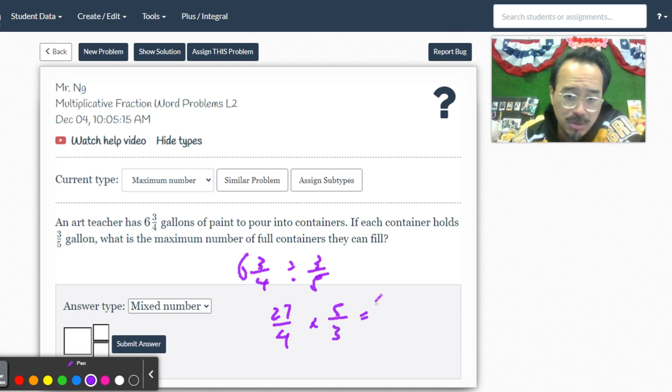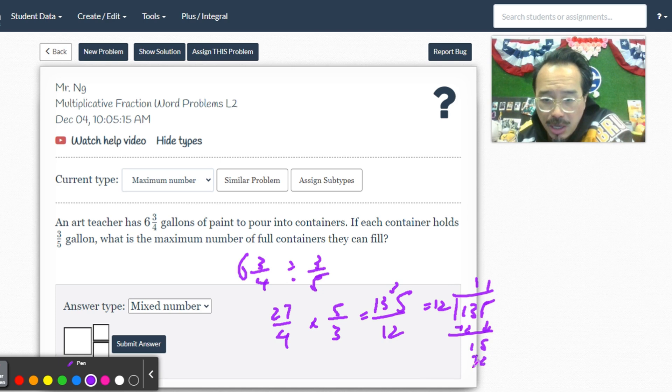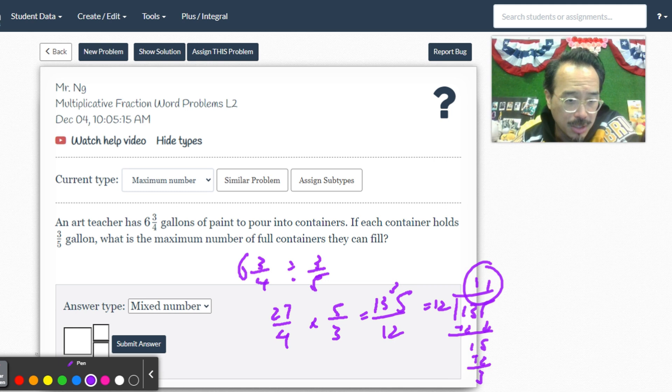Five times seven is 35, five times two is ten, that's 135. Four times three is twelve. I do the long division: 12 going into 13 one time, bring down the five. 12 into 15 is one time.